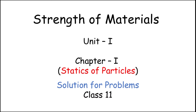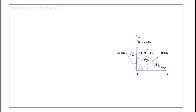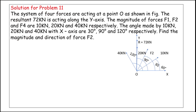A system of four forces is acting at a point O as shown in the figure. The resultant is 72 kilonewtons acting along the y-axis. We need to find the magnitude of forces F1, F3, and F4 — note: F3 was mistakenly mentioned as F2 earlier.